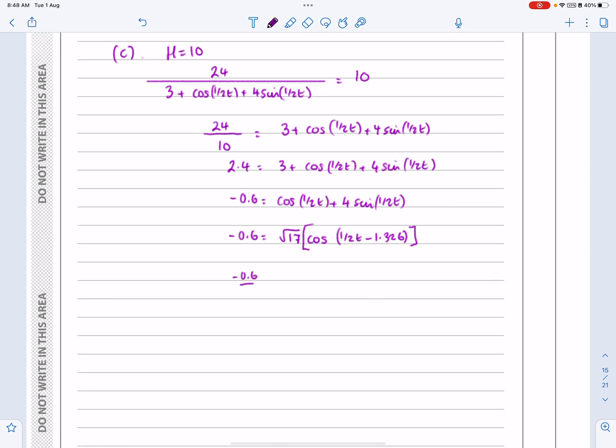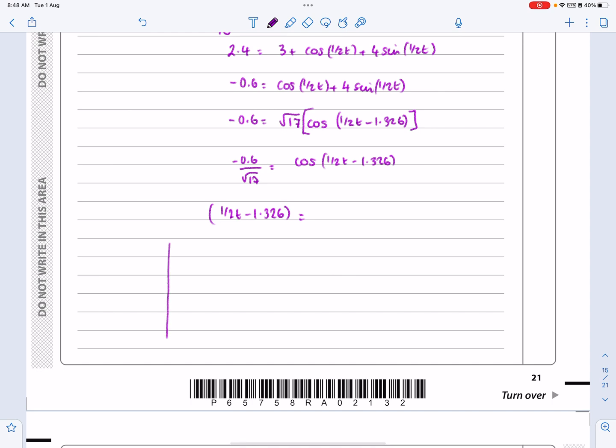So, we have minus 0.6 over root 17 is going to be equal to cos half T minus 1.326, and then if you cos to the minus 1 there, so at this stage we're going to get a half T minus 1.326 is going to be equal to, well again, this is the bit that you don't necessarily need to do, but I'll just explain it to you. If we're going to get that it's a negative, then my answer is in one of these two possibilities. So, we get that it works out to be 1.7168, or it works out to be 4.566.